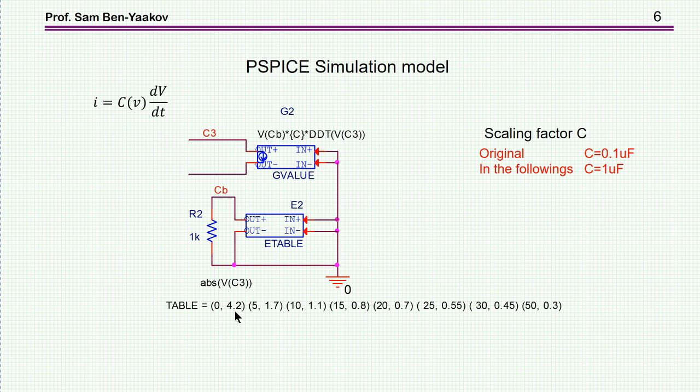The first value at zero volt will be 4.2 microfarad times this microfarad. Then it'll be 1.7 microfarad at 5 volt, at 10 volt will be 1.1 microfarad, etc. This is the heart of the model. This is the model of a voltage-dependent capacitor.